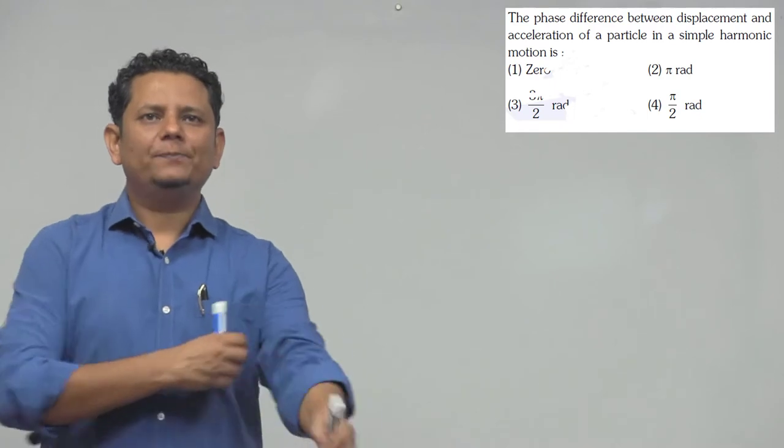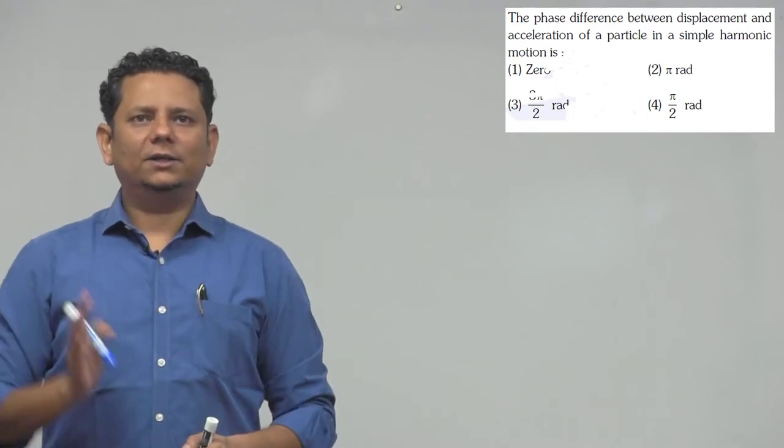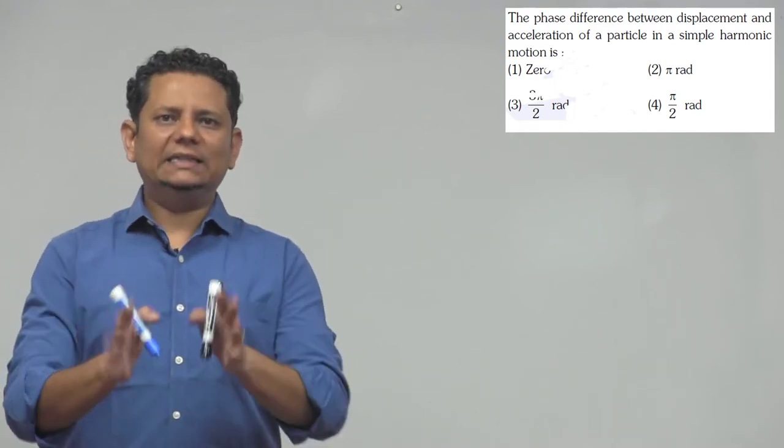Next question. The question says the phase difference between displacement and acceleration of a particle in a simple harmonic motion is: option is zero pi, 3π/2 or π/2. So pi is the right answer.